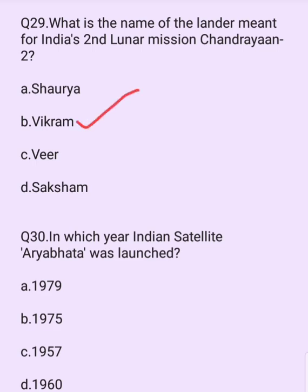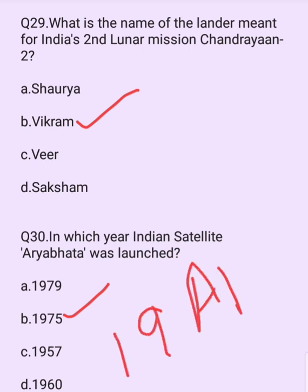In which year was the Indian satellite Aryabhatta launched? Options are: 1979, 1975, 1957, 1960. The answer is option B: 1975. Aryabhatta was launched on 19 April 1975.